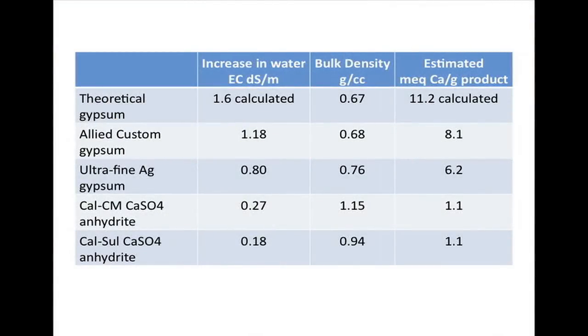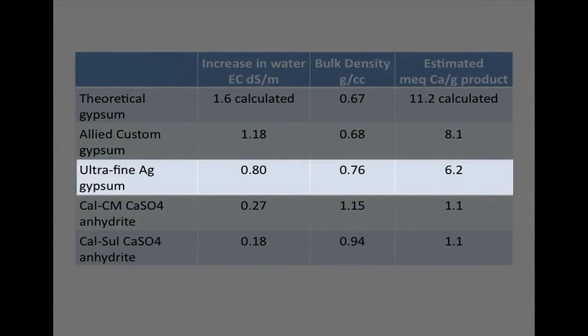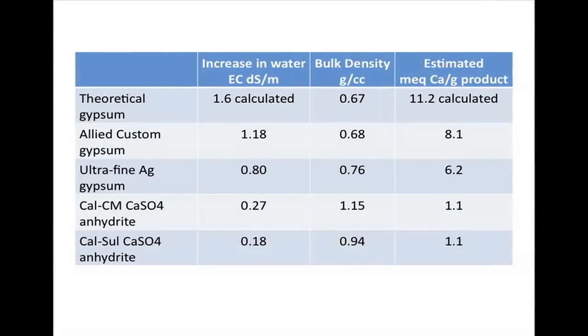So what does this mean for you as you try to interpret your own solubility or dissolution rate test results? Based on our tests, products that are composed primarily of gypsum should raise the EC of the water by a minimum of roughly 0.8 deci-siemens per meter. Remember though, this 0.8 deci-siemens per meter number was obtained only after we subtracted the EC of the water from the EC of the water 15 minutes after the product had been added to it. If the product you're testing shows a much lower increase in EC than 0.8, then it might not be gypsum, and it most likely will not perform the same as gypsum in the field nor have the same sodium management benefits.